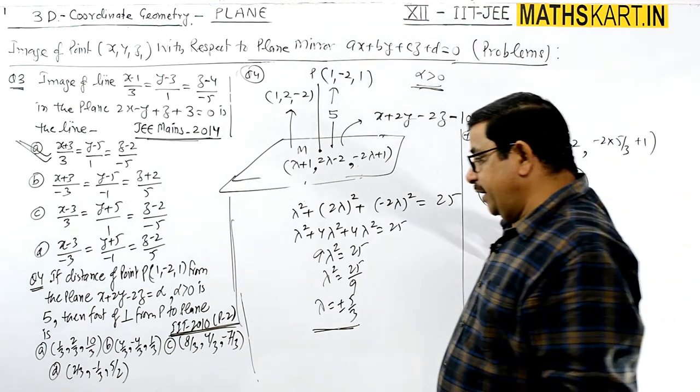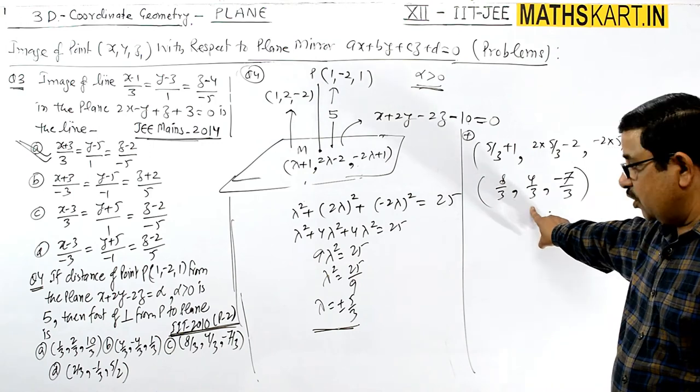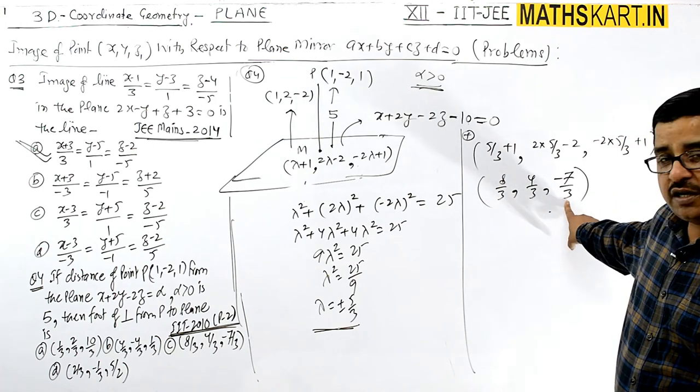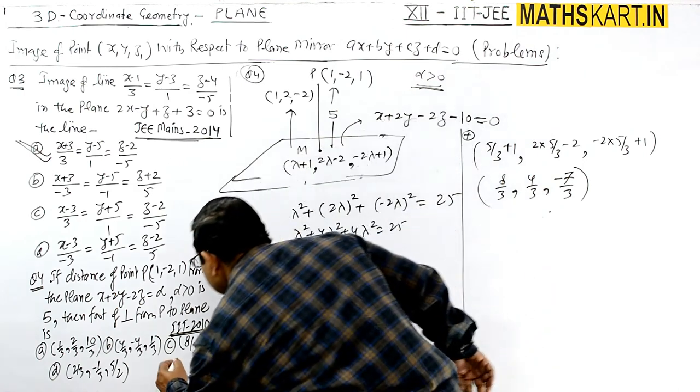Now check this point. If it is available, then it is right. So 8/3, 4/3, -7/3. The point is there. C option is right in it.